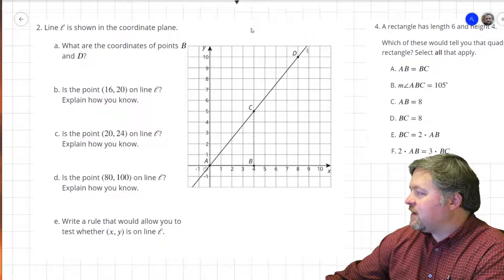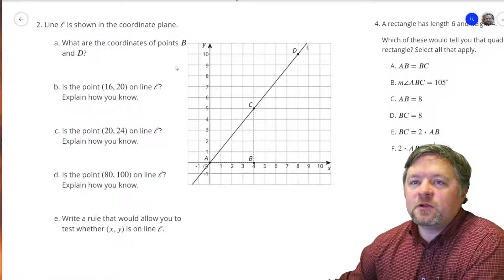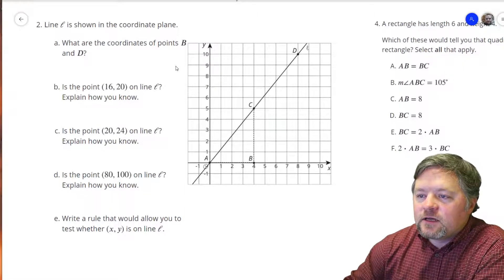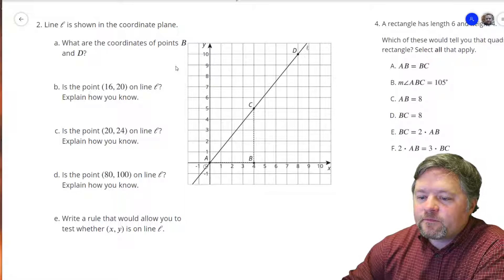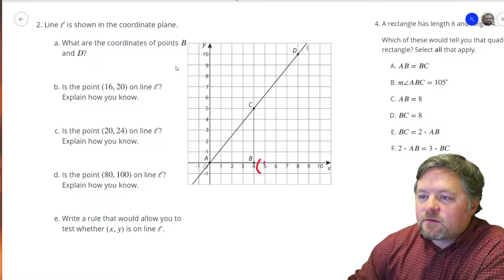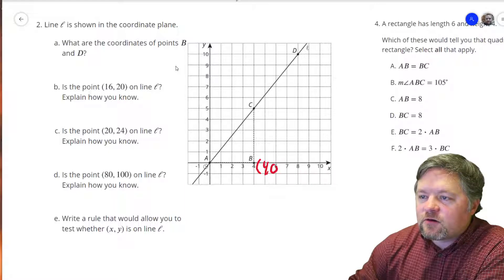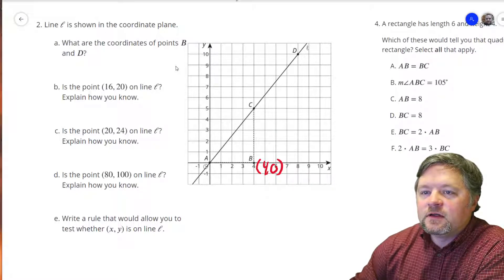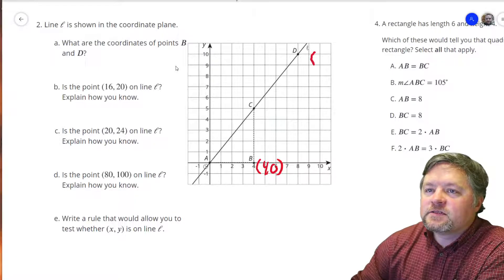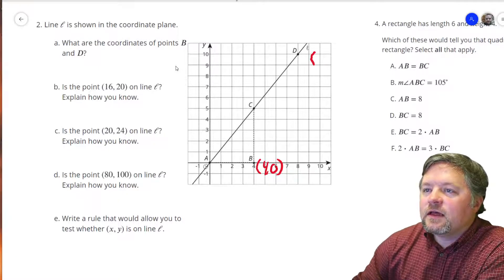Line L is shown on the coordinate plane. What are the coordinates of points B and D? Well, here's B. Is the point 4, 0. Right? D is the point 8, 10.